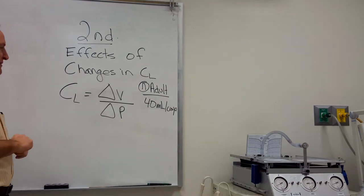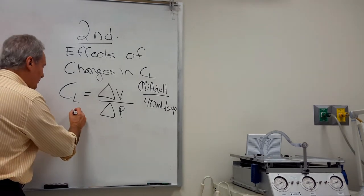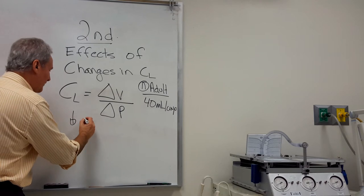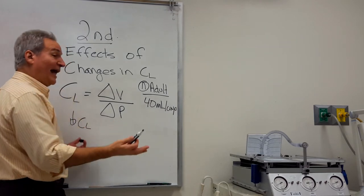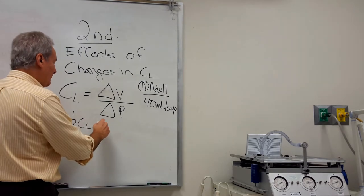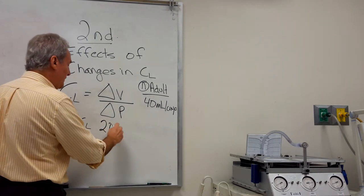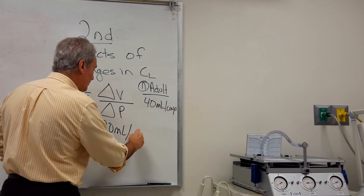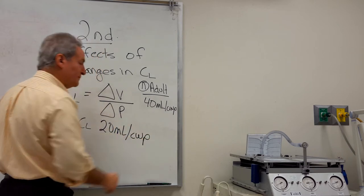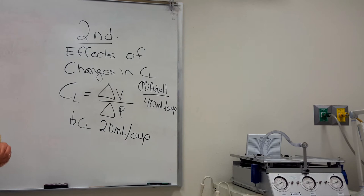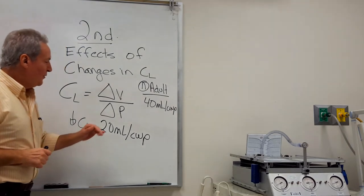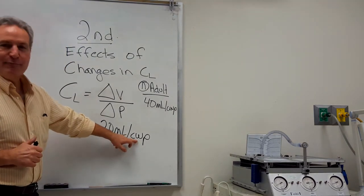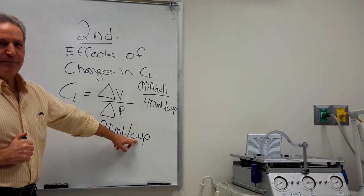What happens if compliance goes down? In the lab, we might decrease lung compliance to 20 mL per centimeter of water pressure. What does that mean? It's harder to ventilate this patient now. We're only going to get 20 mL for that same one centimeter of water pressure that we had before.